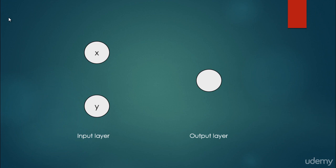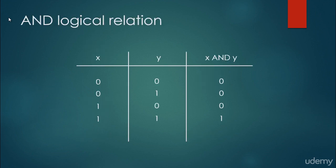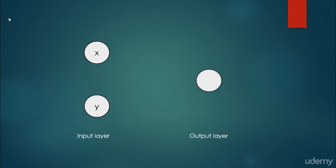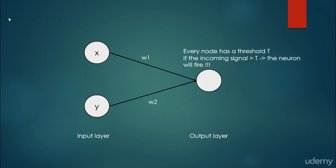Both x and y can have values 0 or 1. We have the output layer, which is going to represent x AND y, and it is going to be 0 or 1 as well. We can have edges with edge weights w1 and w2. Every node has a threshold t in a neural network, so if the incoming signal is greater than this threshold, then the neuron will fire.